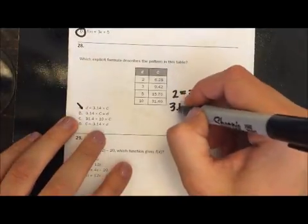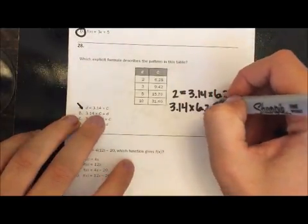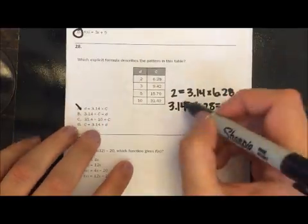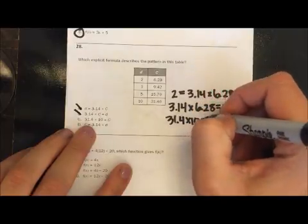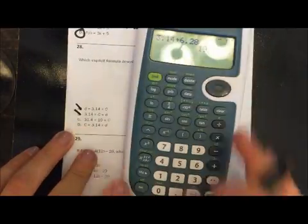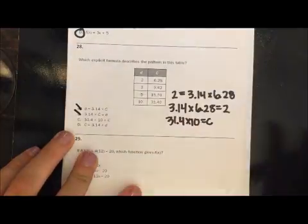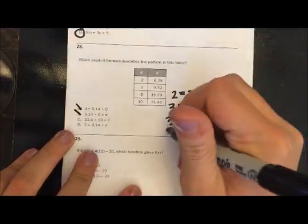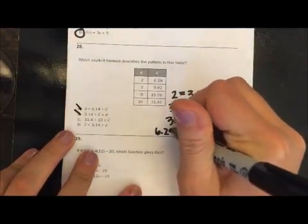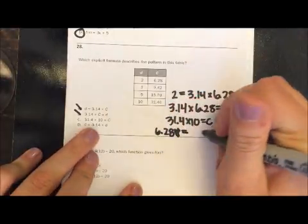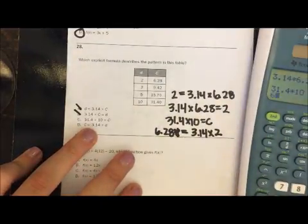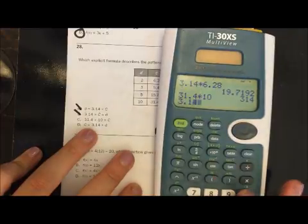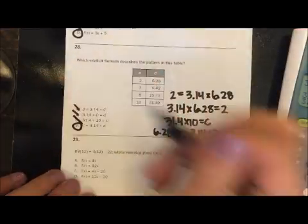Let's try B. 3.14 times C gives me D. Well, that's the same thing, but backwards. That's not going to work. 31.4 times 10 equals C. Well, let's try 31.4 times 10. It gives me 314. I don't even see that number. And so let's try 6.28, our C value, equaling 3.14 times our D value, which is 2. And 3.14 times 2 is 6.28, so D would be your option.